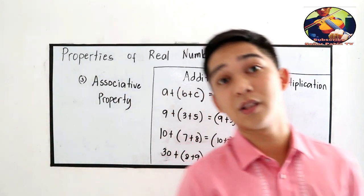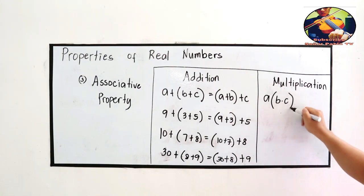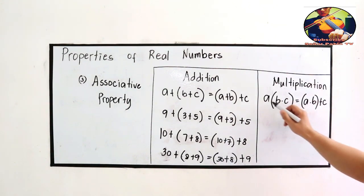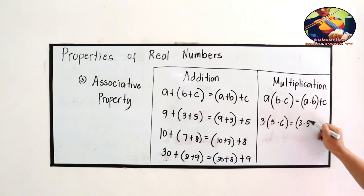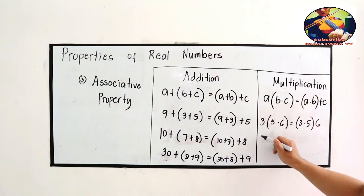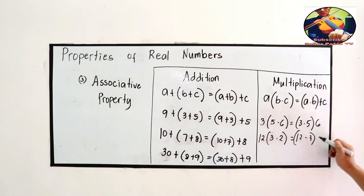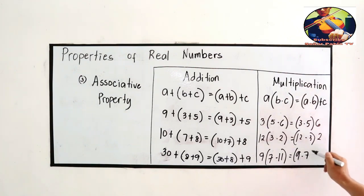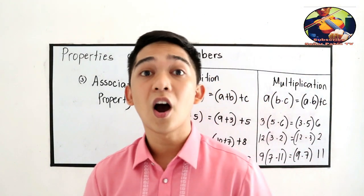For the associative property of multiplication, the same concept applies — it's about grouping. (A × B) × C equals A × (B × C). For example, (3 × 5) × 6 equals 3 × (5 × 6), (12 × 3) × 2 equals 12 × (3 × 2), and (9 × 7) × 11 equals 9 × (7 × 11). That is the associative property of multiplication and addition.